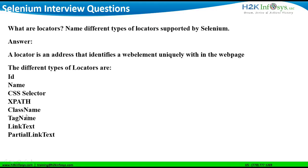Class name locator uses the class name attribute of an element to locate the element. Tag name locator — every HTML element has a tag name, and this locator uses those HTML tags to locate the web element. Link text locator is a very important locator when working with web elements like links; it uses the text available between the start tag and end tag to locate an element. Partial link text locator is very similar to link text locator, but in this case, we use only partial link text to find the web element.